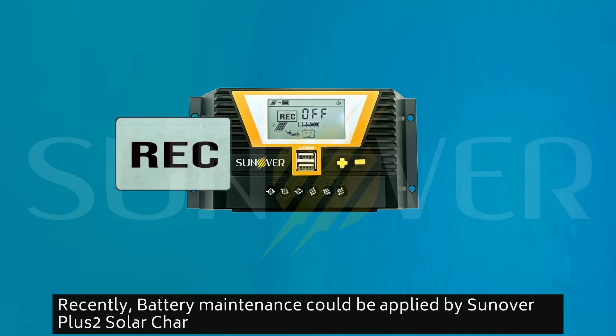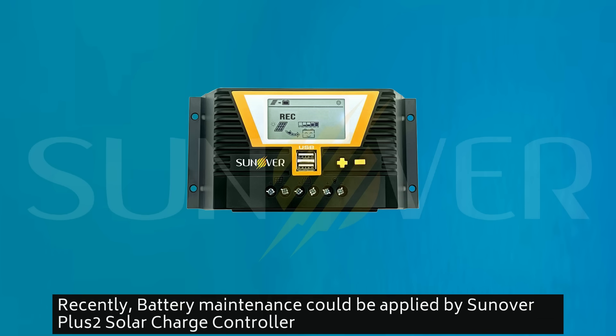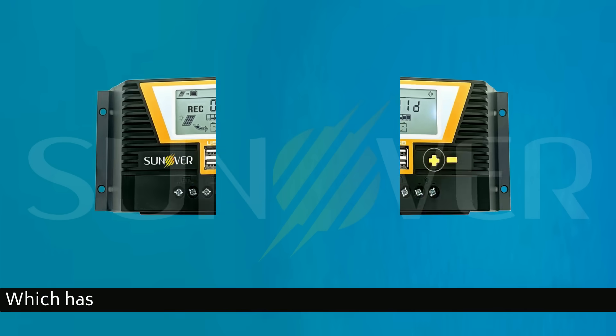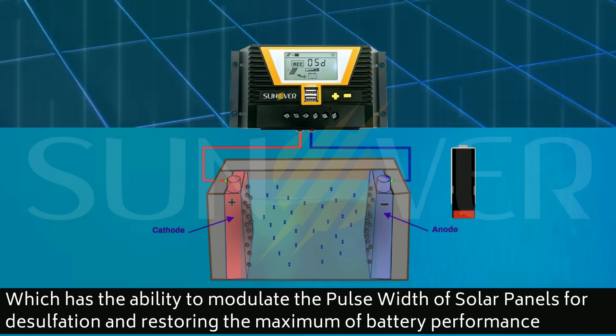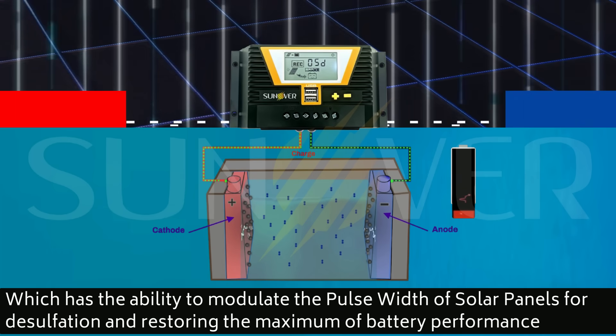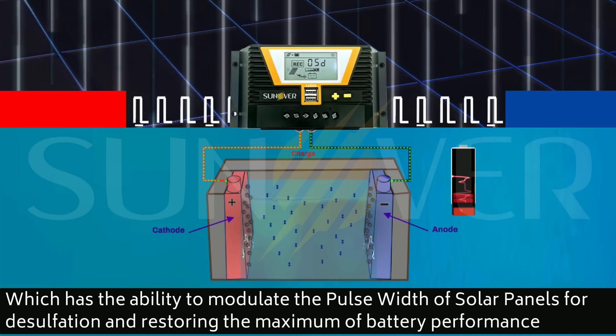Battery maintenance can be applied by the Sun Over Plus Two solar charge controller because of its advantage of modulating the wide pulse issued by solar panels in removing sulfate and restoring the maximum efficiency of the battery.